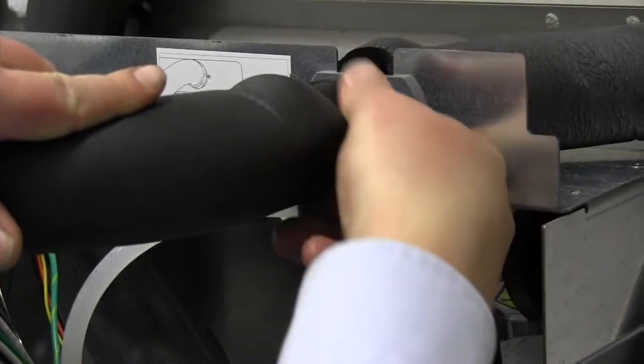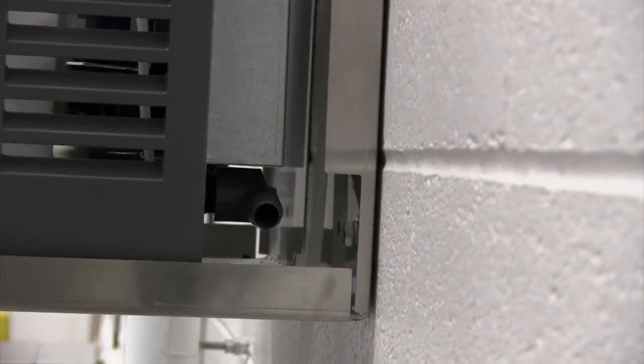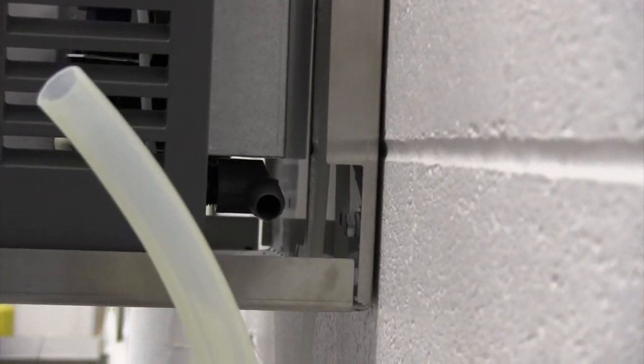We're installing the ice transport tube to the louvered docking station. Now we're attaching our drain. We're using a silicone tube.